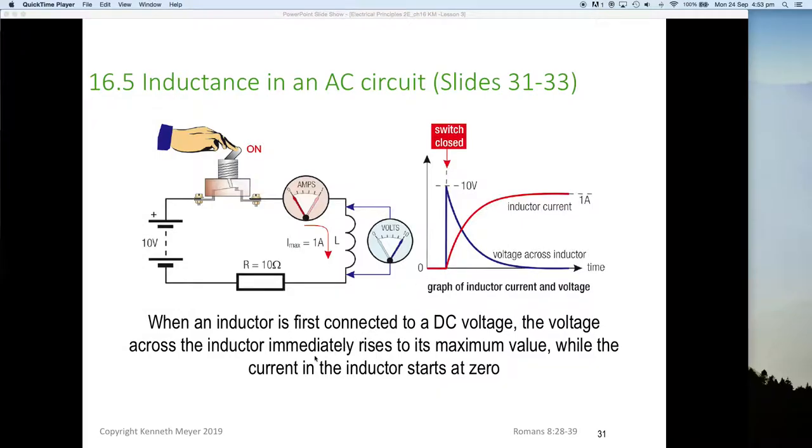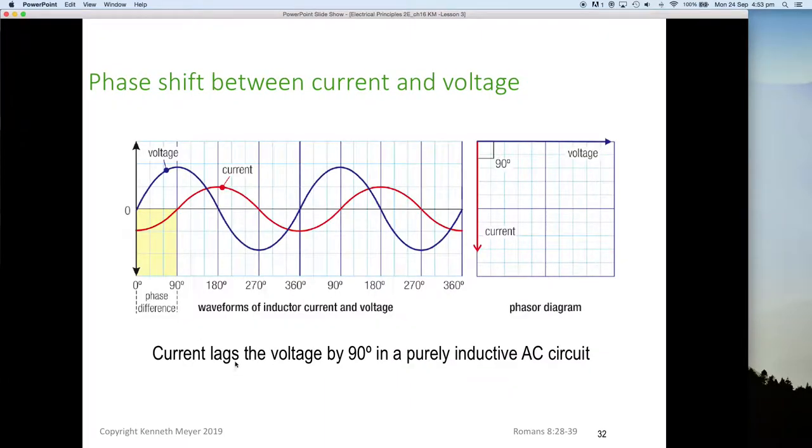So this is going to create a phase shift between the current and the voltage. And you can see here is our blue voltage waveform, and you can see our current is 90 degrees behind. When the voltage here is at its maximum, the current is actually at its minimum.